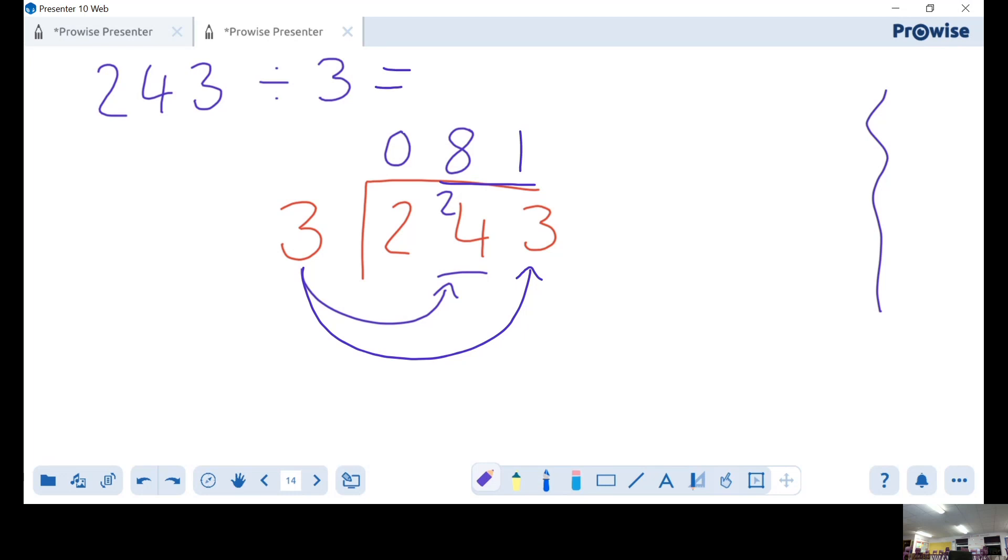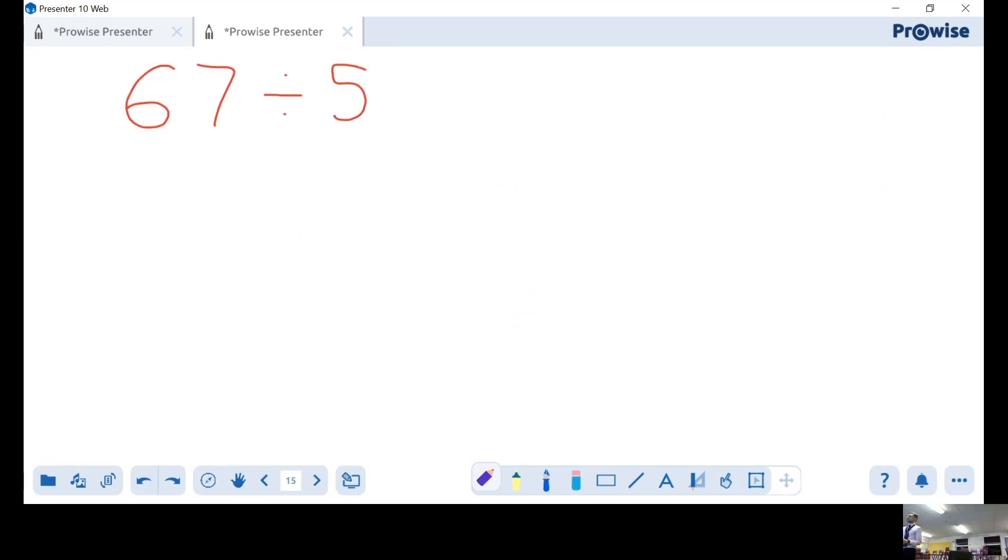Next, 67 divided by 5. So let's have our 67 and let's put a little bus stop over him. There we go, and he's being divided by 5 today. Lucky him. First things first.